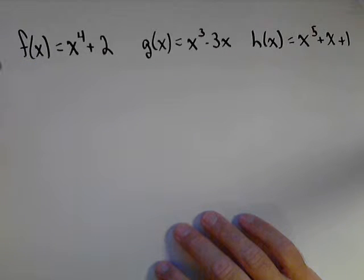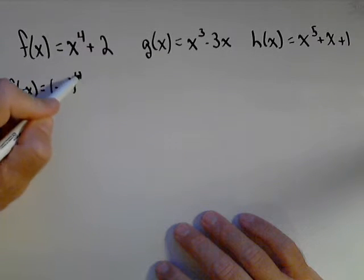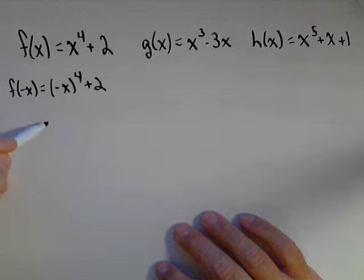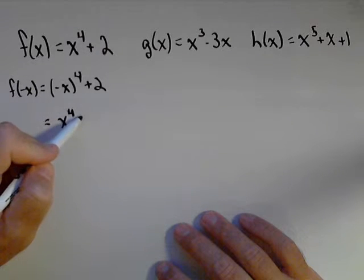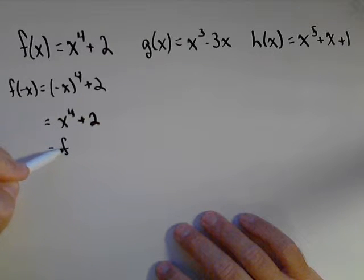For f of x, showing even, odd, or neither all starts with the same step, which comes from putting negative x in as our input. So we calculate f of negative x, which is negative x to the fourth plus 2. Because of the even exponent, negative x raised to the fourth simplifies down to x to the fourth. The even exponent makes the negative cancel, plus 2. This is exactly equal to the original function f of x, so by definition we have an even function.